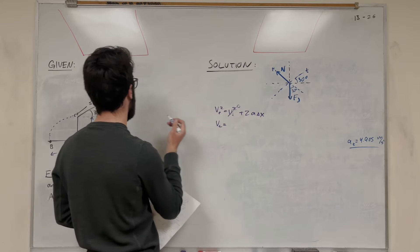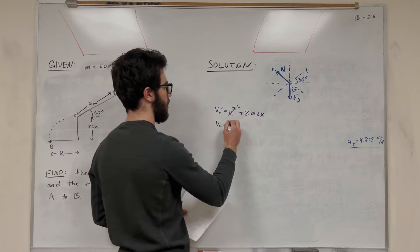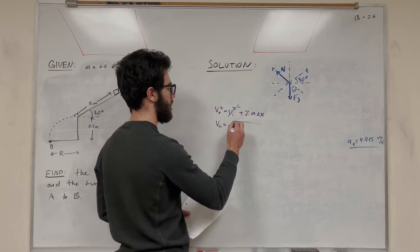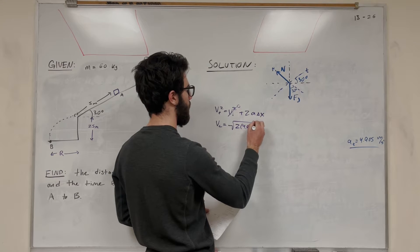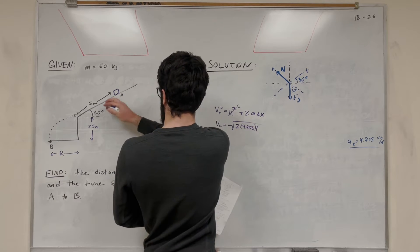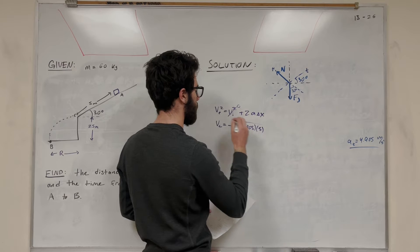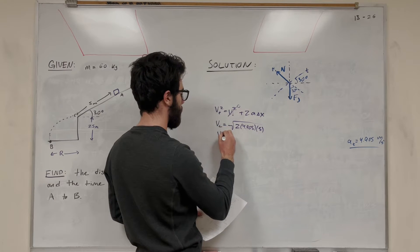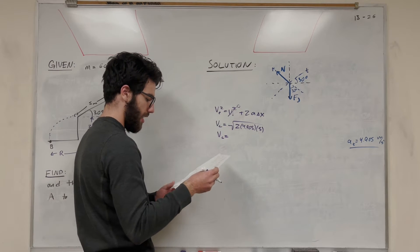The velocity initial is 0, starting at rest at A. So let's take the square root. That's going to be 2, acceleration 4.905, change in X we know that's 5 meters. So our velocity at point C is 7 meters per second.